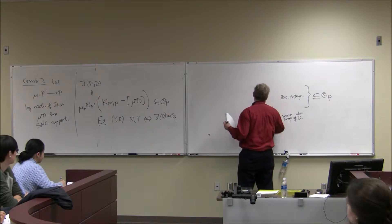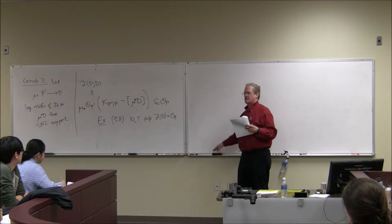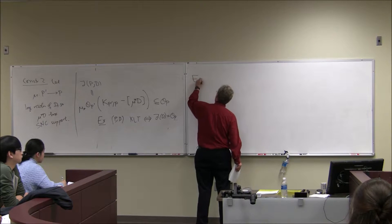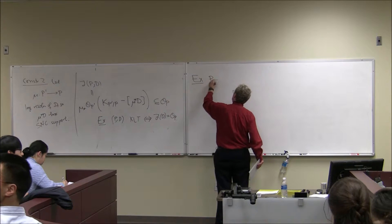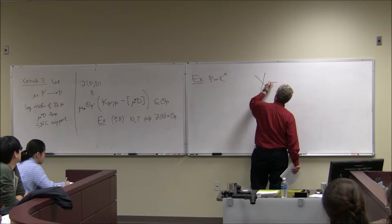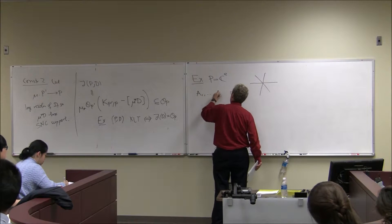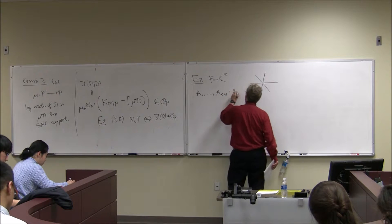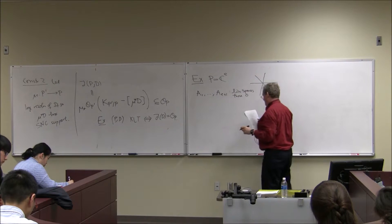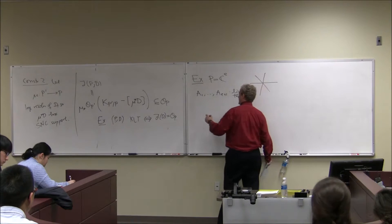If you have a D that has an interesting singularity, you get an interesting ideal, and multiplier ideals come with vanishing theorems — specifically Kodaira-type vanishing theorems for ideal sheaves. Let me give a prototypical example. The construction is local, so we take C^e, complex space of dimension e. For my divisors A_i I just want to take a bunch of linear spaces through the origin — E+1 of them, so A_1 through A_{E+1} will be linear spaces through the origin.